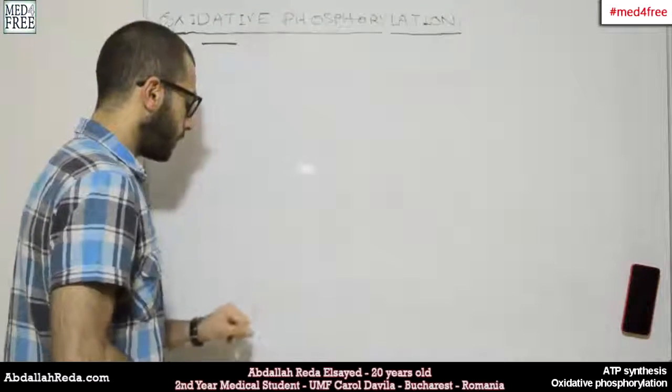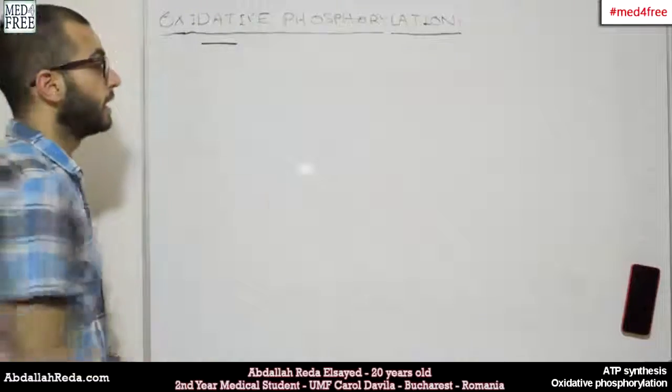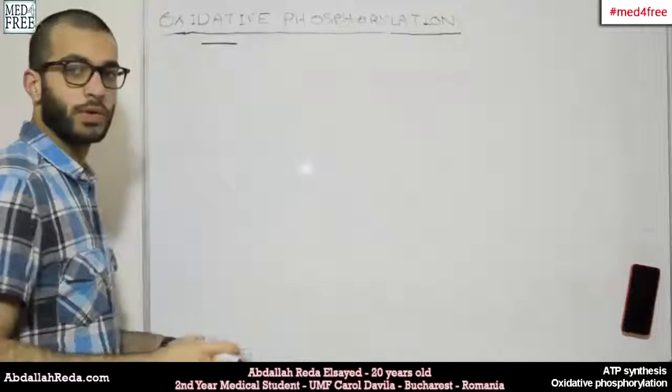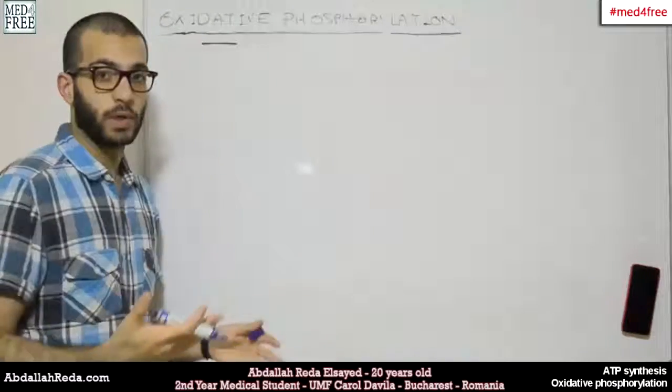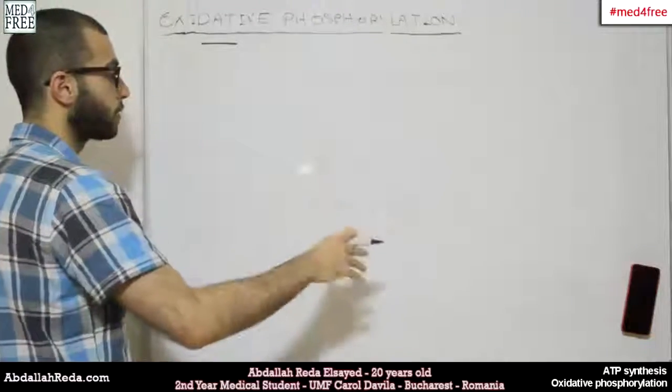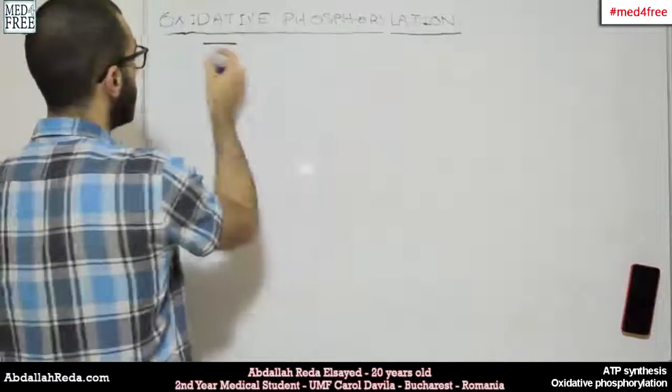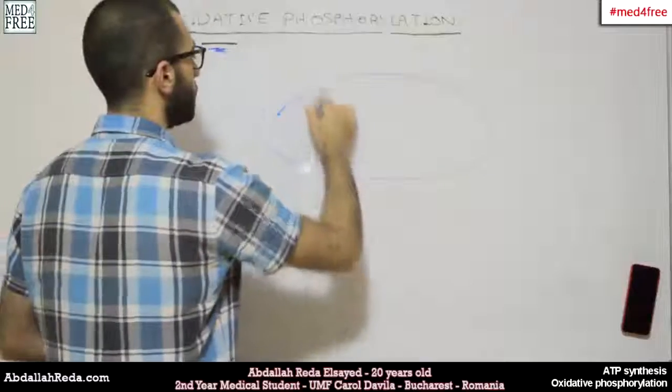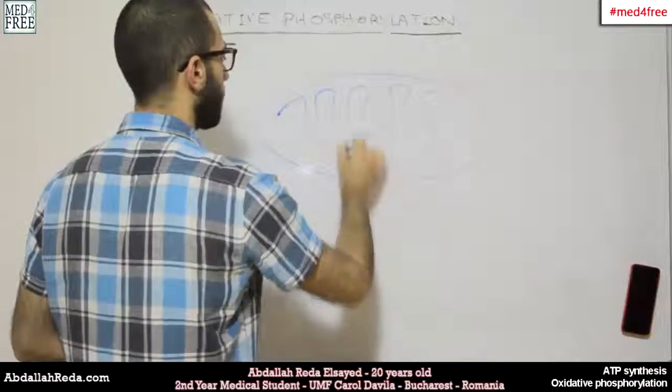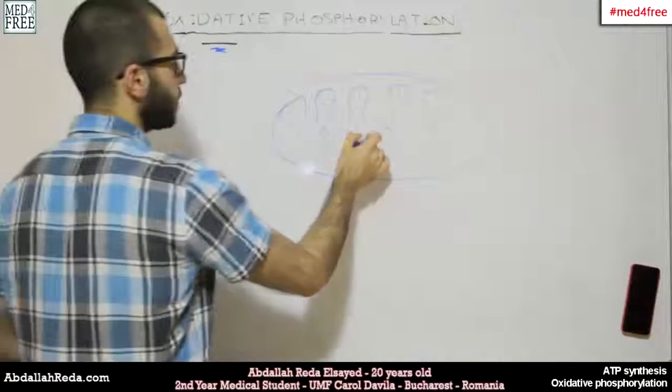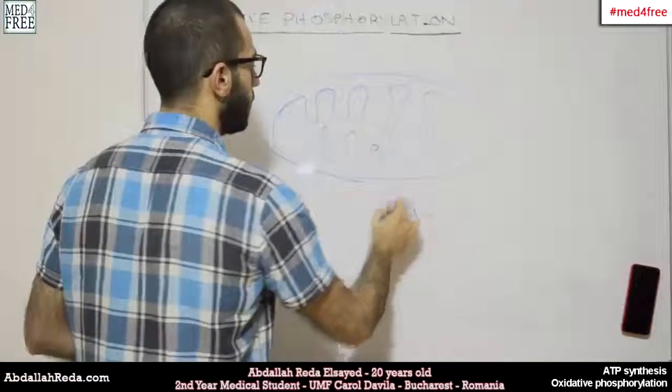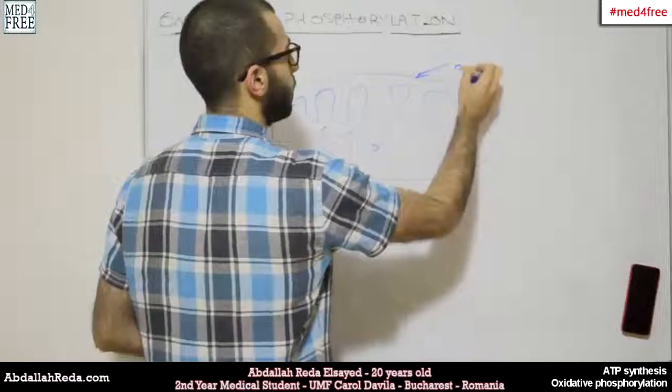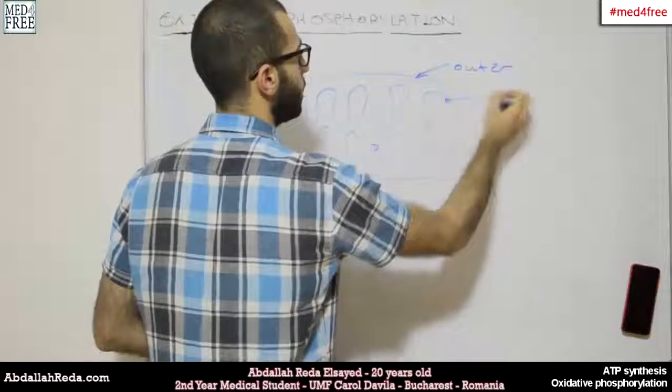What happens through oxidative phosphorylation is that this step happens inside the mitochondrion, because the mitochondria are the centers of energy production in the cell. They are the organelles which are responsible to produce energy. If we have the mitochondria like this, that would be the matrix of the mitochondria. The mitochondria has two membranes, an outer membrane and an inner membrane.